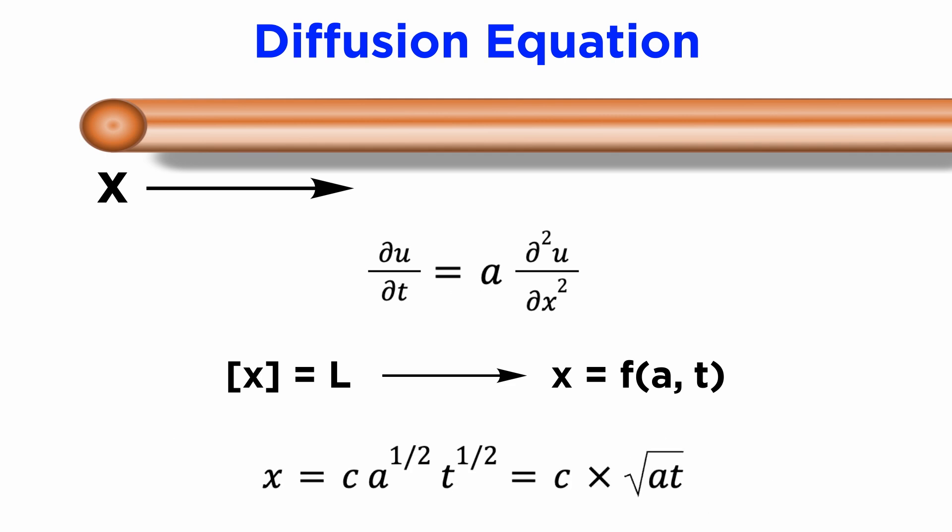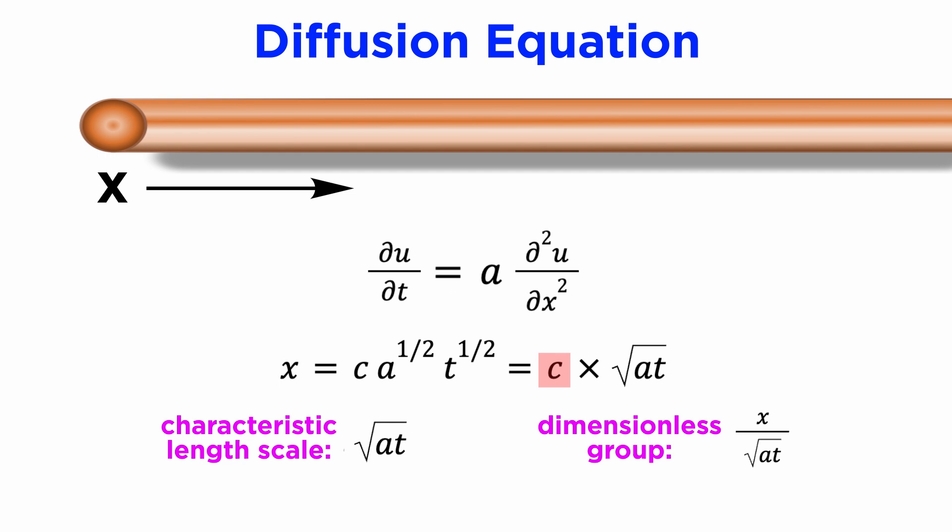So we have x equals f of A t, which is c times the square root of A t. If we isolate our constant c, we get what is referred to as a dimensionless group, x divided by the square root of A t, and this quantity c is known as a dimensionless number. What we have essentially found is a way to normalize any general length coordinate x by dividing it by this characteristic length scale, square root of A t, and this will be the key to proceeding with solving the PDE.